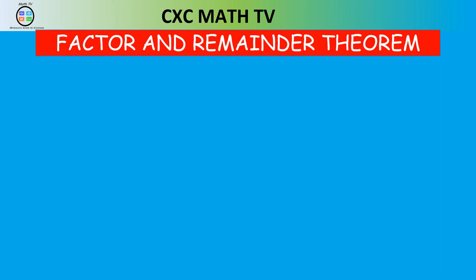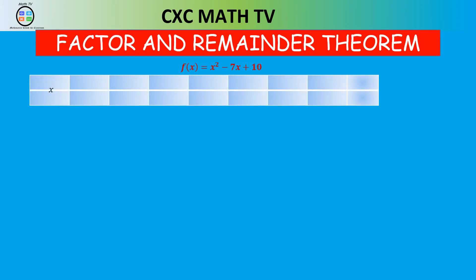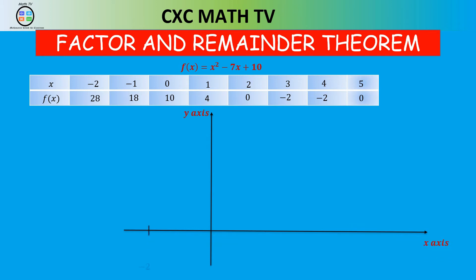If you were to plot the graph of this quadratic function: when x is negative 2, y is 28; x equals negative 1, y is 18; x equals 0, y is 10; x equals 1, y is 4; x equals 2, y is 0; x equals 3, y is negative 2; x equals 4, y is negative 2; x equals 5, y is 0. Plotting those points gives a quadratic graph, and the roots of the quadratic are at x equals 2 and x equals 5, where y is 0.